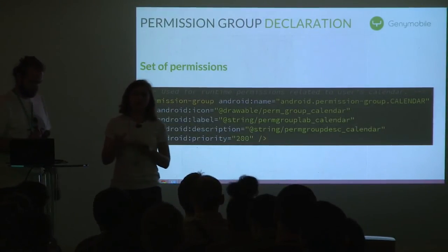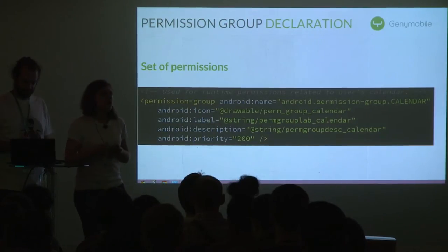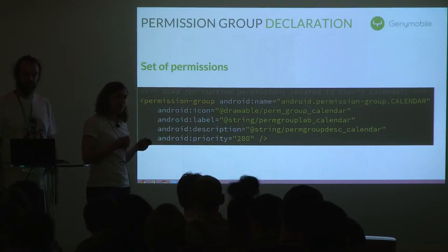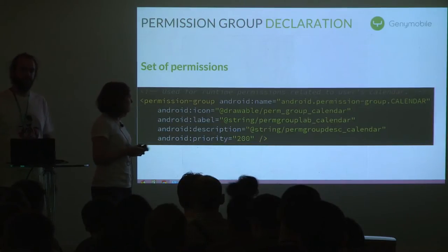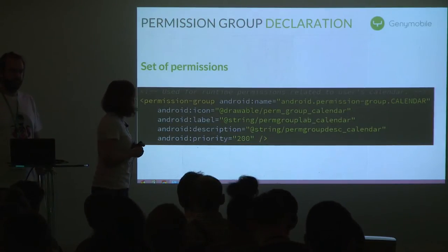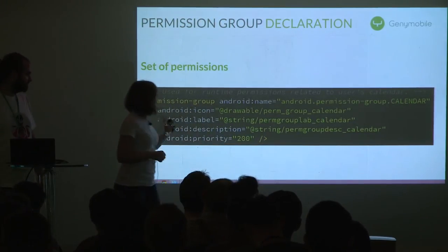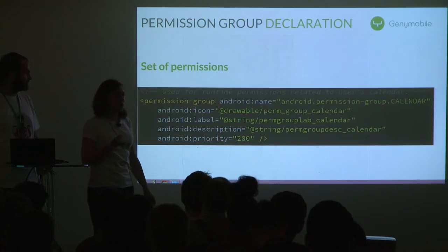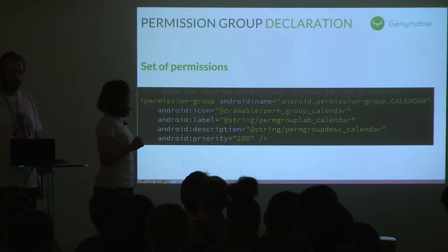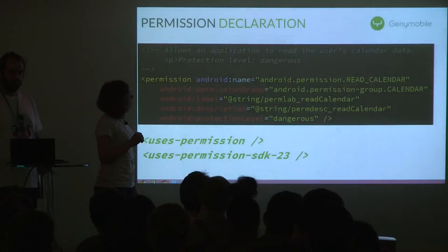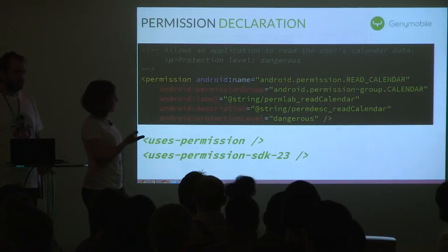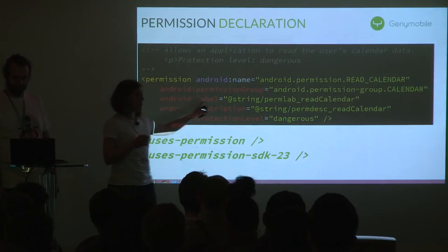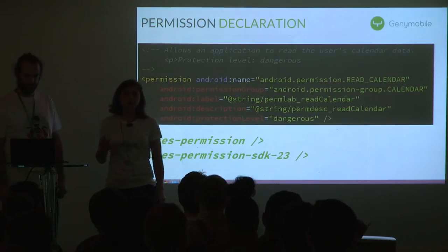When installing an application under Lollipop, you saw groups — permission groups — which are a set of permissions. You can declare a custom permission group in your Android manifest. The priority attribute is completely optional; as of Marshmallow the system is not using this attribute. When you declare your own permission, all attributes are mandatory except the permission group, because you can declare a permission outside of a group. You can also omit the protection level and it defaults to the lowest protection level.